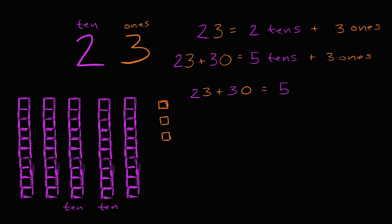And then we're gonna have three ones in the ones color, in that orange color. And three ones. So 23 plus 30 is 53. You have two tens plus three tens give you five tens. Three ones plus zero ones is equal to three ones.